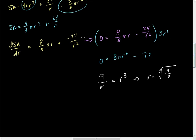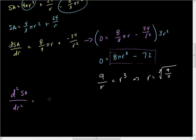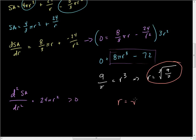We want to check whether this is actually a minimum, since up to this point we've mostly dealt with maximums. We take the second derivative of the surface area: d²SA/dr² equals 24πr². If you substitute this value of r in, you get a positive result, so it's greater than 0. Since it's greater than 0, it's concave up, which means we have a minimum. So r equals the cube root of 9/π.